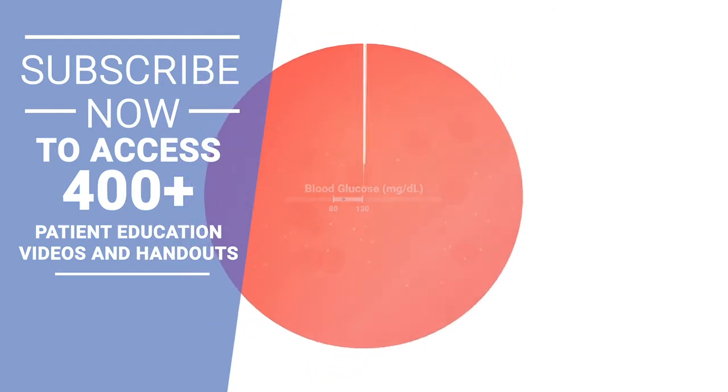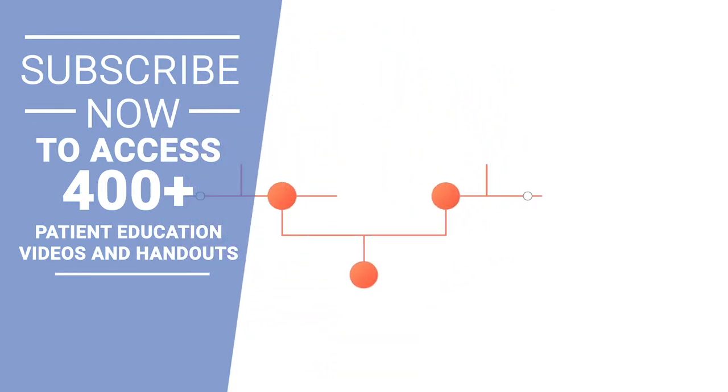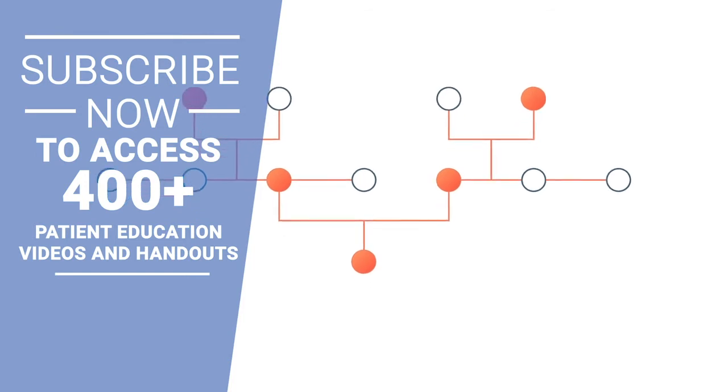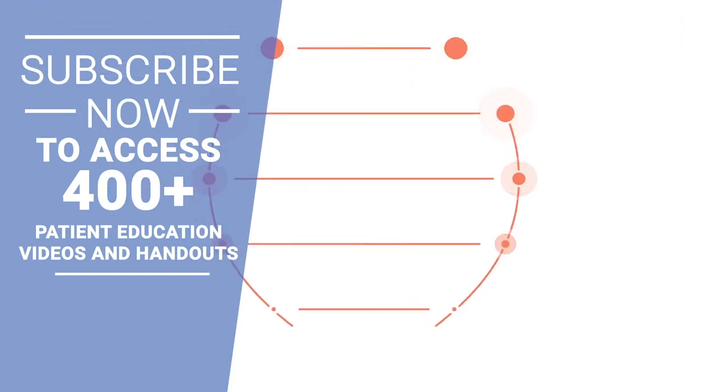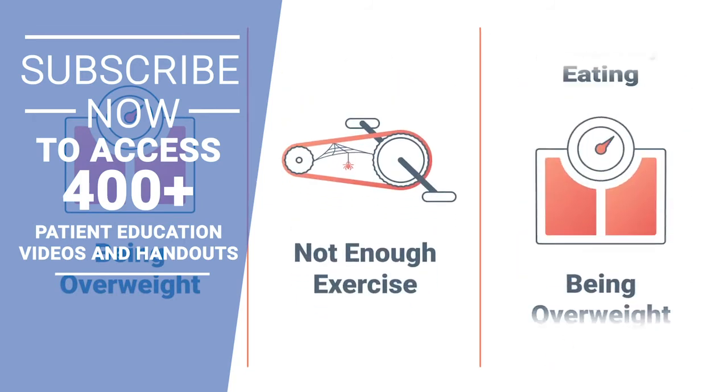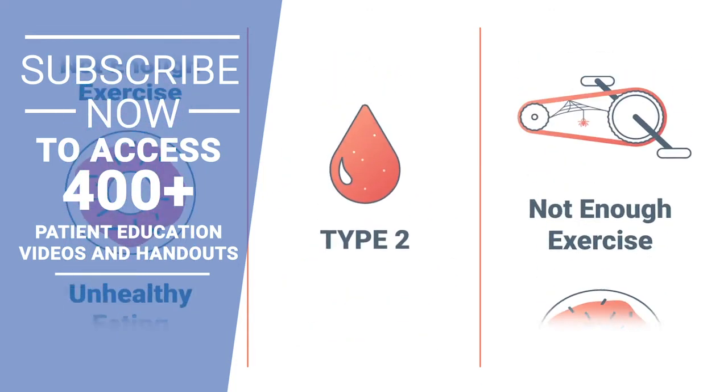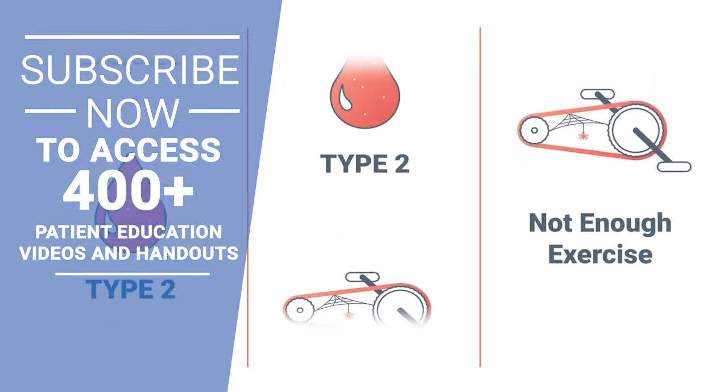Type 2 diabetes is the most common type of diabetes, and it tends to run in families. It's caused by a combination of genetics and lifestyle factors. Being overweight, not getting enough exercise, unhealthy eating, and other lifestyle habits can increase your chances of developing type 2 diabetes.